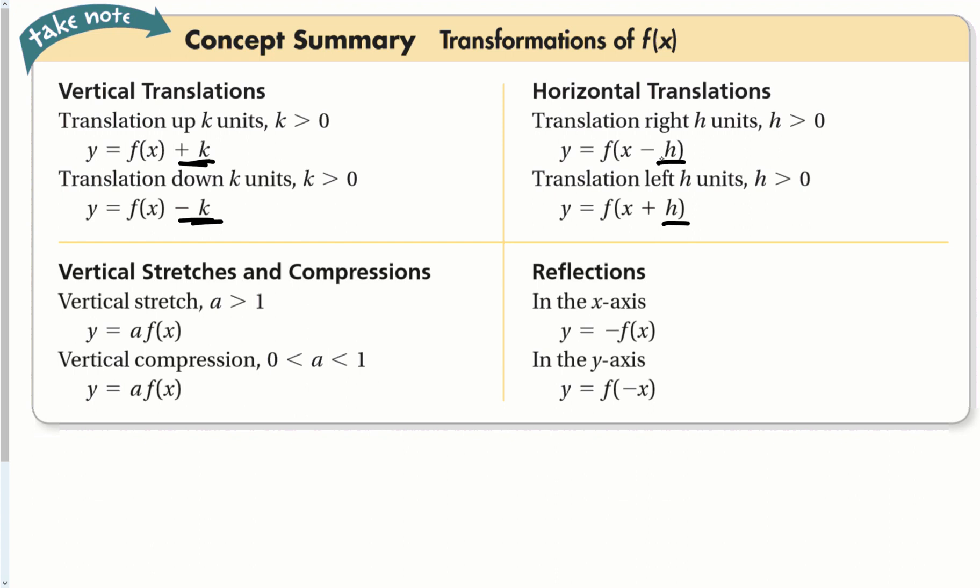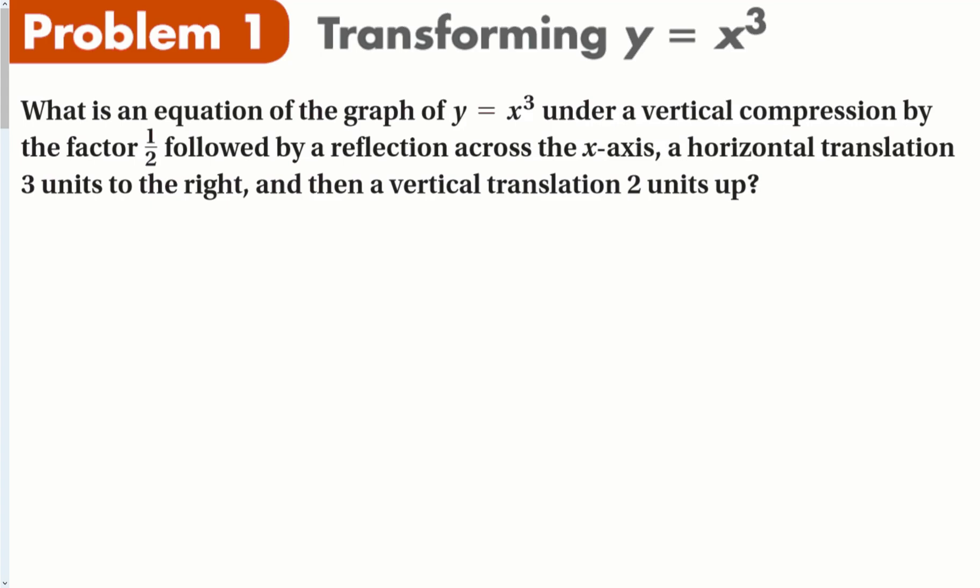If that number is outside the parentheses, it shifts up or down. If it's inside the parentheses, remember: a negative shifts the function to the right, a positive shifts it to the left. If the number in front is bigger than 1, it is a stretch; if it is between 0 and 1, it's a compression. A negative in the front reflects across the x-axis, and a negative inside the function reflects across the y-axis.